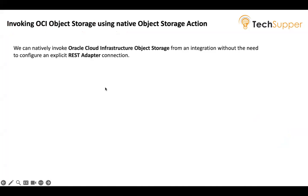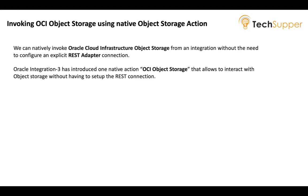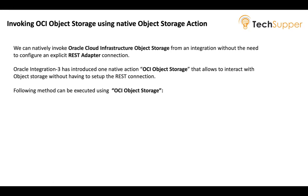We can natively invoke OCI object storage from an integration without the need to configure an explicit REST adapter connection. In Oracle Integration 2, if we needed to fetch files or list buckets from OCI object storage, we had to use the REST connection and REST adapter, configure security policies — a lot of things. But now Oracle Integration 3 has simplified this by providing a native action inside integration named OCI object storage, which allows you to interact with object storage without any extra REST connection.